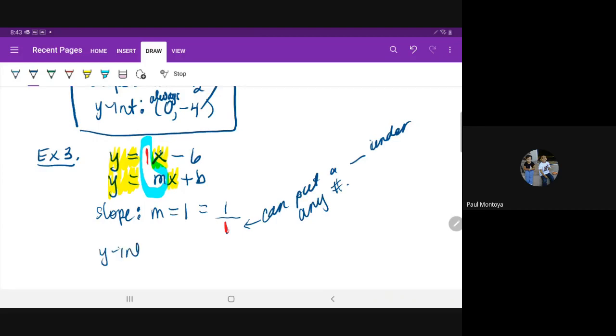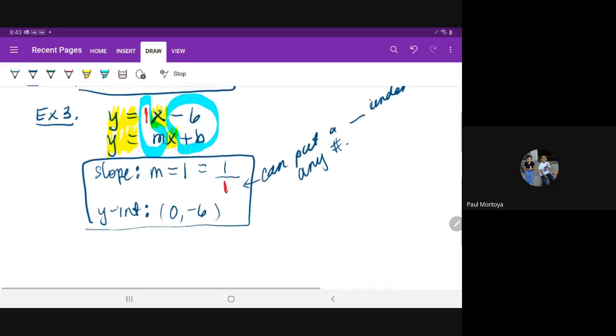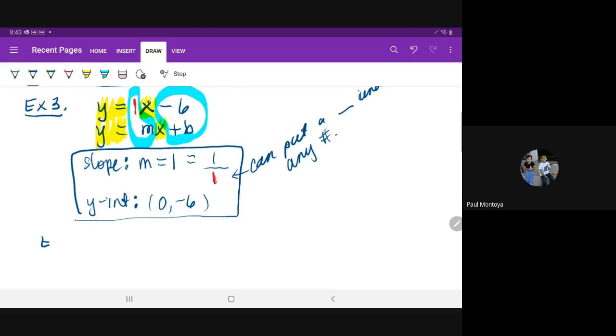And then we have to write what the Y intercept is. So you can write Y, I, N, T. And then you always put a zero here for the X because X equals zero. And then the B would be zero comma what number. Can you guys see what number the B is? The B is the Y intercept, but we just write it as a coordinate. Uh-huh. Zero negative six. Yep. So this right here is your answer. Okay. So we're going to do one more and then I'm going to have you do some yourself.